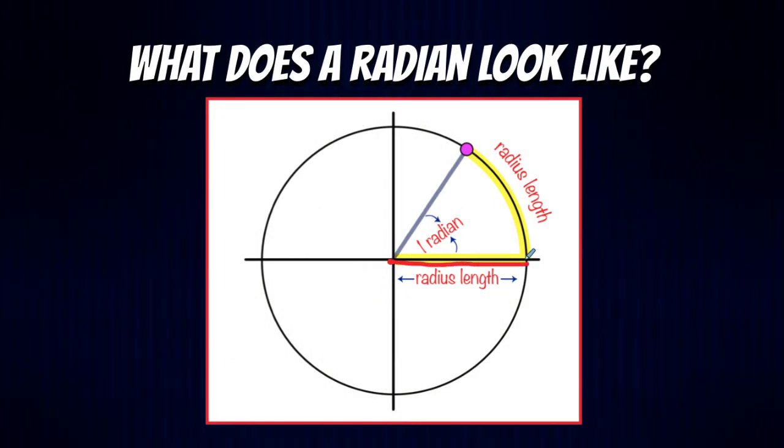The way we form a radian is really simple. We take the radius length and map that onto the circle itself. The arc that's formed has the same length as the radius, then we connect the center of the circle to the edge of the arc.